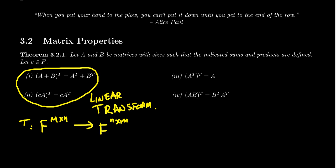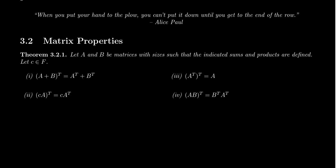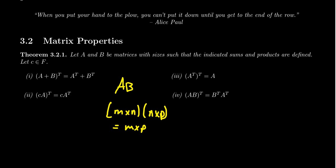The fourth property considers how transposition interacts with matrix multiplication. If A is an M by N matrix and B is N by P, then the product AB is M by P. It turns out that (AB)^T equals B^T times A^T — not A^T times B^T. Notice that when you take the transpose of a product, it switches things around: B comes first, A comes second.